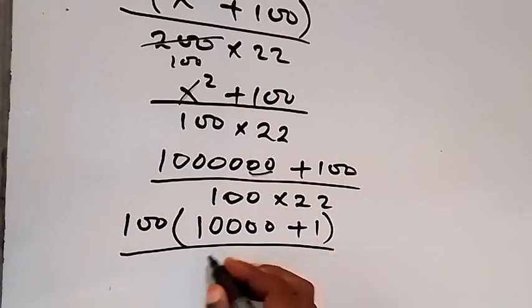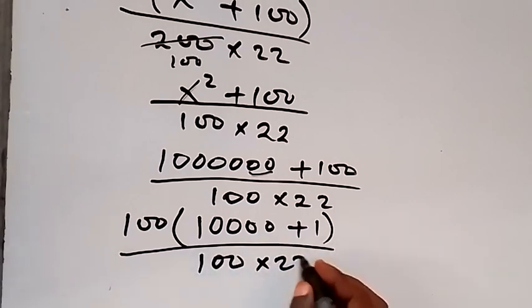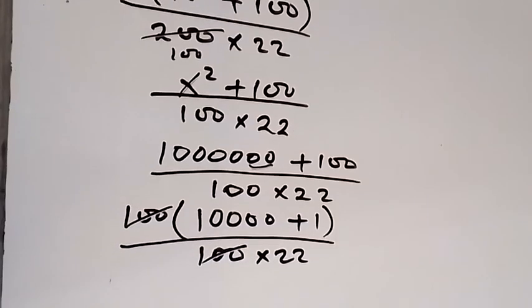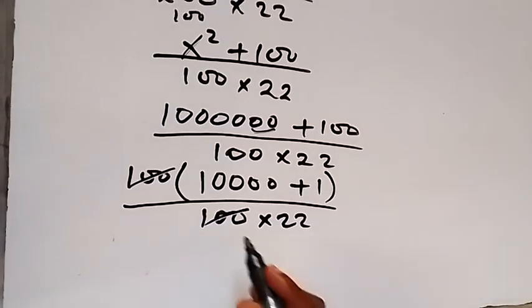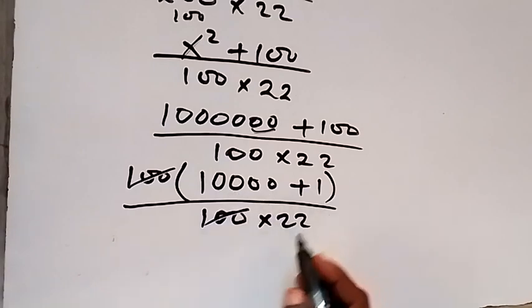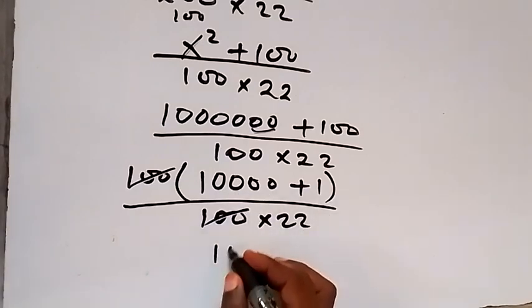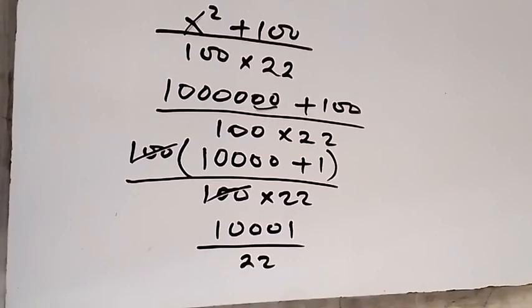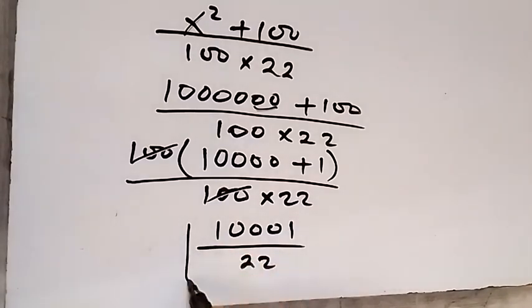Then divided by 100 times 22. And the 100 we cancel with 100. And what we have now when we add this together will be 10,001, that's 10,001 divided by 22. And here we have simplified the expression, we have the answer to the problem.